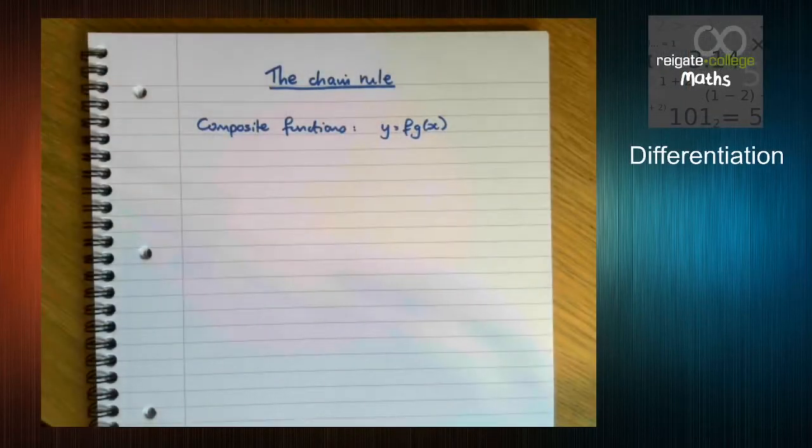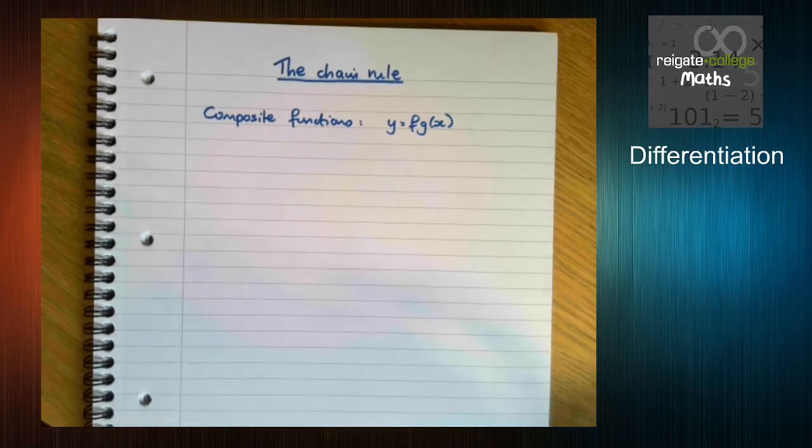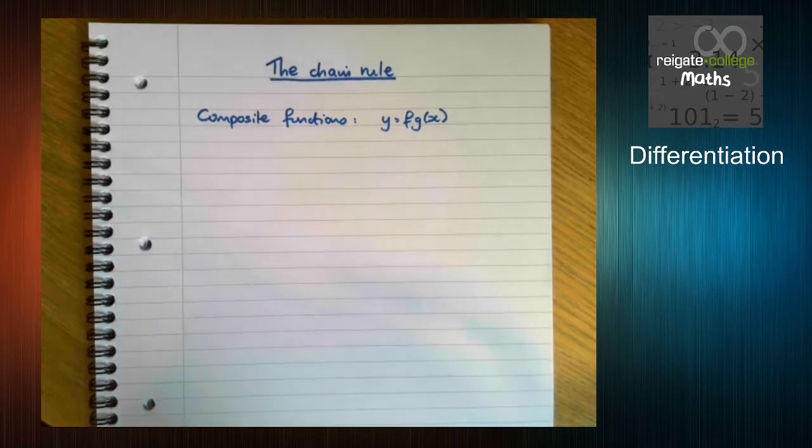What the chain rule is used for is differentiating composite functions, so when you have one function inside another.